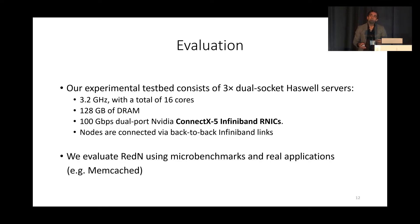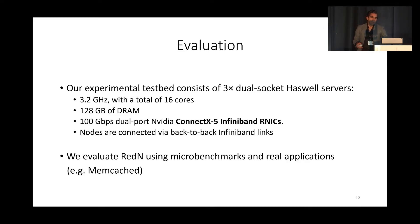Now let's move on to the evaluation. Our experimental testbed is comprised of three nodes, running at 3.2 GHz on 16 cores with a 100 gigabit per second dual-port ConnectX-5 NIC. We evaluate Redden using a variety of use cases and microbenchmarks. For brevity, I'm going to focus on memcached, but you can check the paper for more use cases and benchmarks.